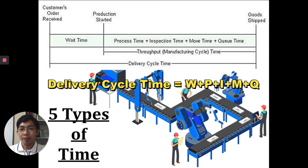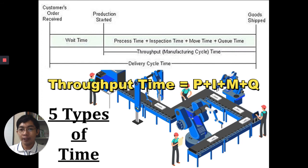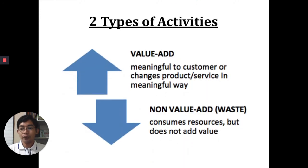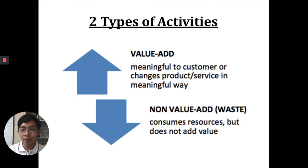If we add wait time, process time, inspection time, move time, and queue time together, we call it your delivery cycle time. If we add only process time, inspection time, move time, and queue time — excluding wait time — we call it your throughput time or manufacturing cycle time.